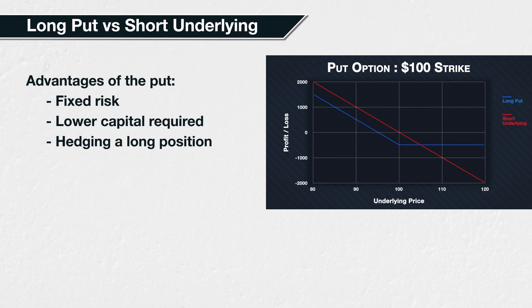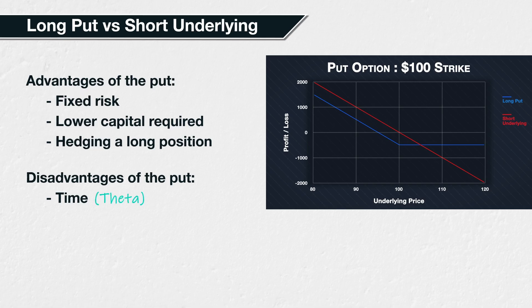As well as the premium paid, there is one major disadvantage worth mentioning — the inherent time limit that an option has. If the expiry date is reached and the price has failed to decrease, the option will expire worthless and result in a loss for the put option buyer.